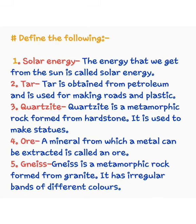Now, define the following. First, solar energy. The energy that we get from the sun is called solar energy. वो energy जो हमें सूर्ज से प्राप्त होती है that is solar energy. Number 2, tar. Tar is obtained from petroleum and is used for making roads and plastics. Tar petroleum से प्राप्त होता है और road और plastic बनाने के लिए किया जाता है।